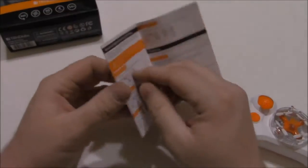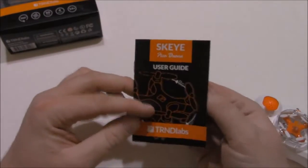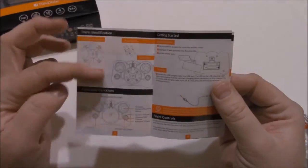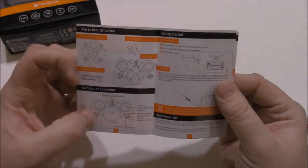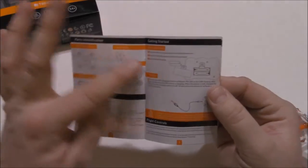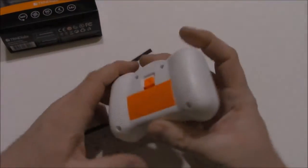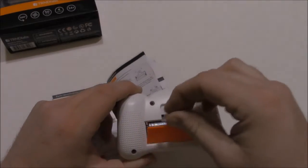So let's go to the user guide. User guide is pretty plain and simple laid out. It explains all the parts of the drone, the controller functions, how to install the batteries in the back of the controller which are two AAA batteries.